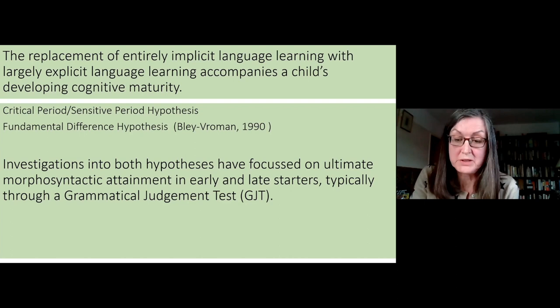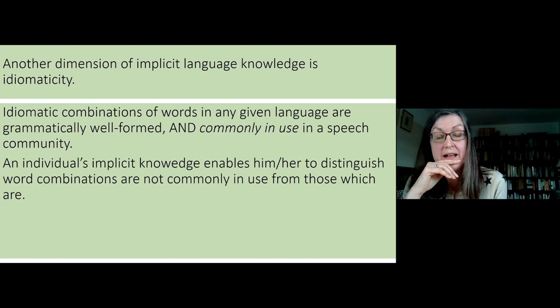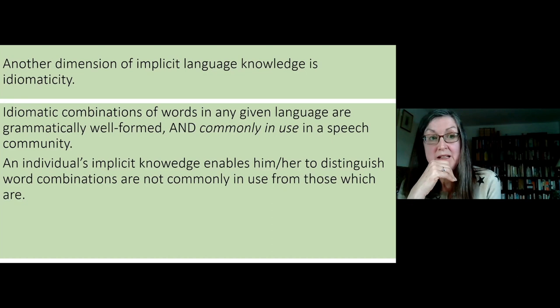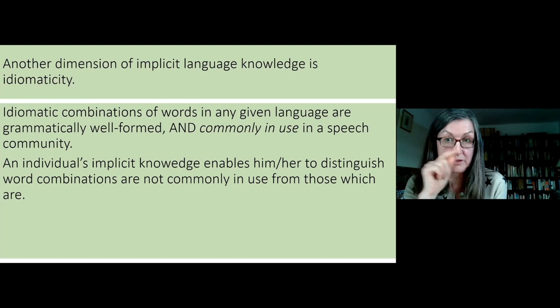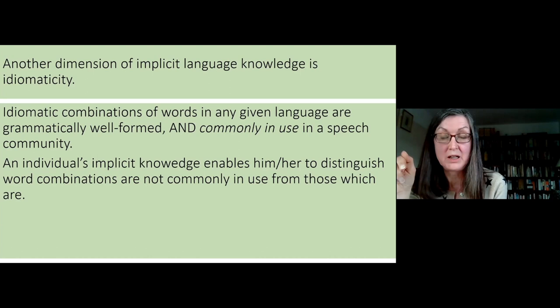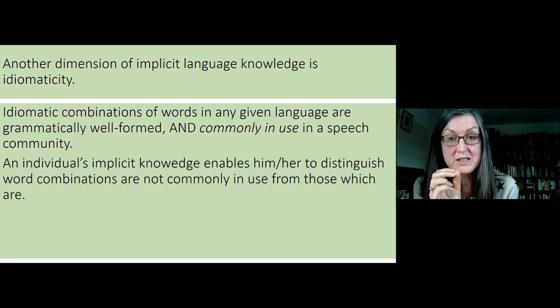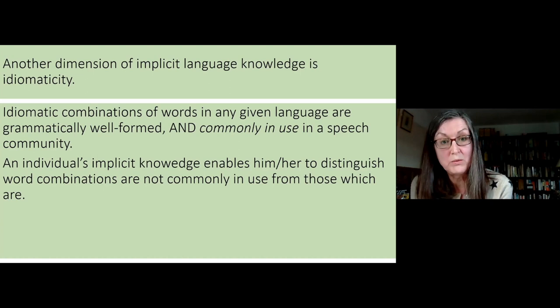Another dimension of implicit language knowledge is idiomaticity. That doesn't usually figure very much in looking at ultimate attainment, but more recently it has been. Idiomatic combinations of words in any given language are grammatically well-formed — that's important — but also they're commonly in use in a speech community. This narrows the field down from what is possible to looking at only what is attested and actual. An individual's implicit knowledge enables them to distinguish word combinations which are not commonly in use from those which are. And often we talk about this as intuition.